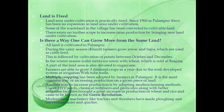Going ahead — land is fixed. The land area under cultivation is particularly fixed. Since 1960, in Palampur there has been no expansion in land area under cultivation. Some of the wasteland in the village has been converted to cultivable land. There exists no further scope to increase farm production by bringing new land under cultivation.